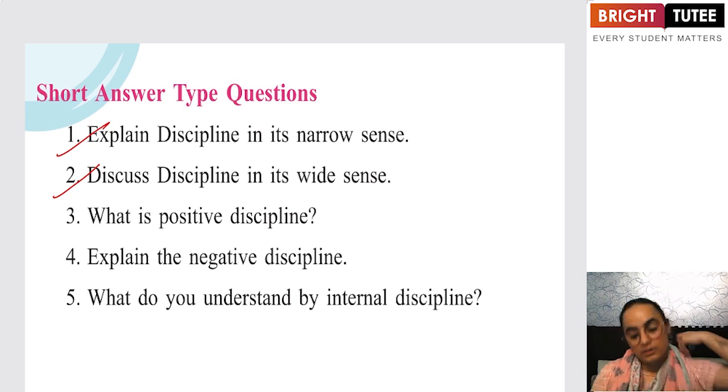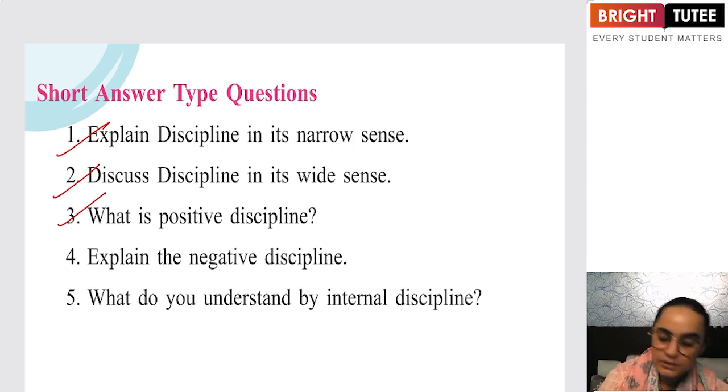What is positive discipline? Positive discipline means when you are happy to do something for the society. When you have sacrificed your own happiness to give happiness to the society, that is negative discipline.